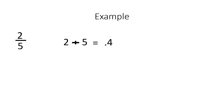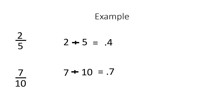Now in case you still need some more info, let's do another one. Let's say we have a fraction, 7 tenths. We take the top number, 7, divide it by the bottom number, 10. Type it in your calculator, and the answer will be 0.7. Really easy. That's how you convert fractions into decimals.